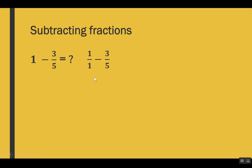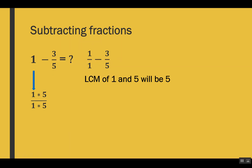Now that we've given a denominator to the whole number, we notice the fractions have different denominators. So we take the LCM, which is 5. One fraction already has 5 as the denominator, so we just convert 1/1 by multiplying by 5, giving us 5/5. Now the question is 5/5 − 3/5. Subtracting the numerators: 5 − 3 = 2, so our result is 2/5.